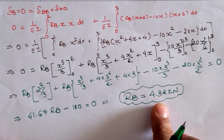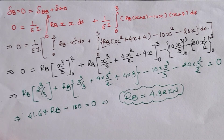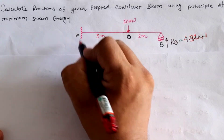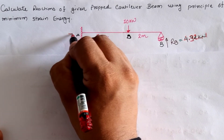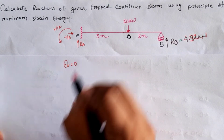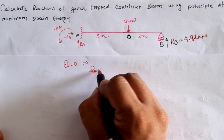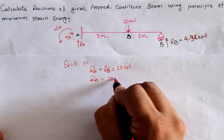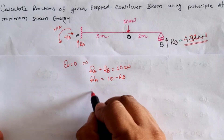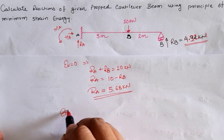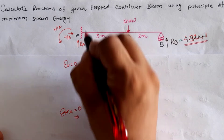From Castigliano's second theorem, the redundant RB = 4.32 kN. For the fixed-end support A, there is an upward reaction RA, horizontal reaction HA, and anticlockwise moment MA. Applying equilibrium ΣV = 0: RA + RB = 10 kN, so RA = 10 − 4.32 = 5.68 kN.